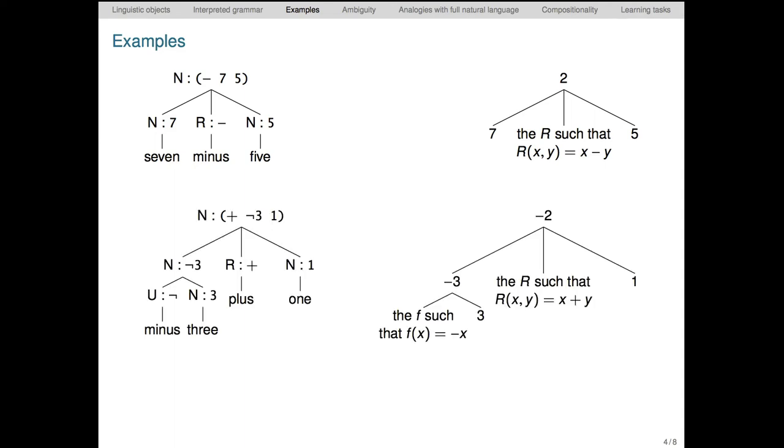This is a slightly more complex example involving the same notational conventions. The utterance is minus three plus one, and here it's been parsed with minus three as a constituent, forming the left argument to the main connective plus. And the logical form is interpreted over here on the right in a structure that mirrors the one on the left.